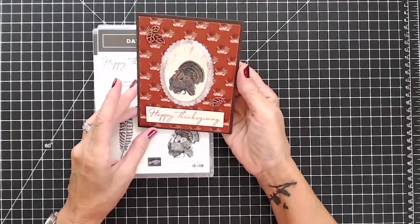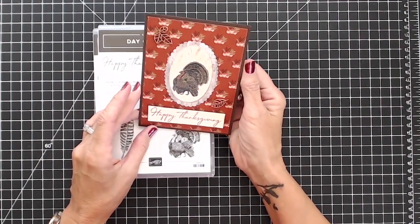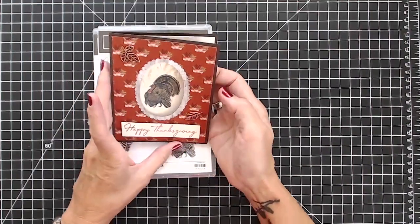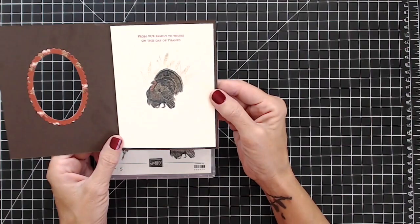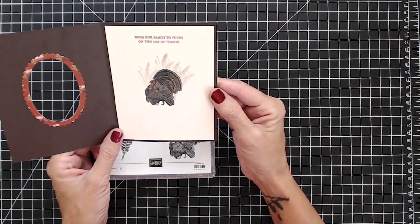Today I'm going to make this really lovely Happy Thanksgiving card. This is actually a window fold and I don't know if you can see it, there's wheat on the inside with that lovely little turkey, little tom turkey.